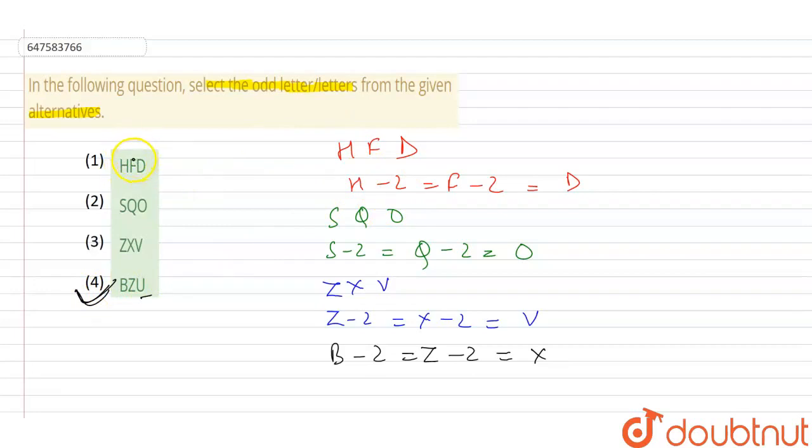All words are minus 2. H minus 2, F. F minus 2, D. So these follow the same logic. We have minus 2, minus 2. But here in the last word is U, which is minus 4, not minus 2. So option 4 is the right answer of this question.